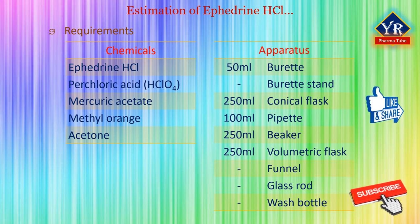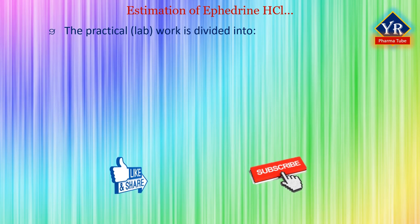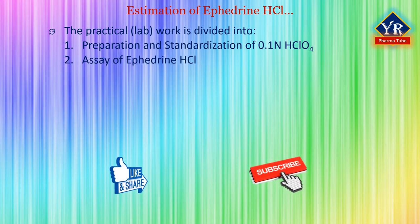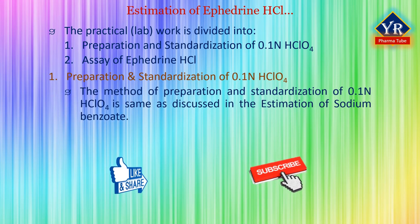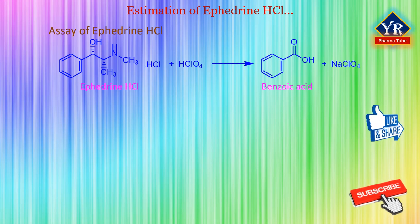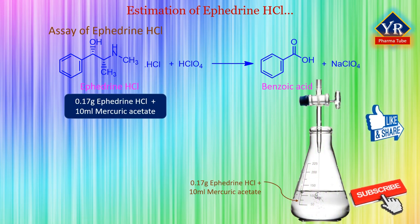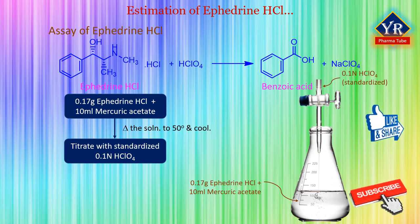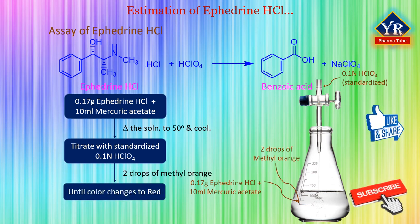The apparatus is the same as mentioned in the estimation of sodium benzoate. The practical work for ephedrine hydrochloride is divided into two parts: preparation and standardization of 0.1 normal perchloric acid, and the assay of ephedrine hydrochloride. The method of preparation and standardization of 0.1 normal perchloric acid is the same as discussed in the estimation of sodium benzoate. For the assay of ephedrine hydrochloride, accurately weigh about 0.17 grams of ephedrine hydrochloride and dissolve in 10 ml of mercuric acetate solution. Heat the solution gently if necessary and cool. Titrate with 0.1 normal standardized perchloric acid, adding two drops of saturated solution of methyl orange in acetone as indicator. After titration, the solution changes its color to red.